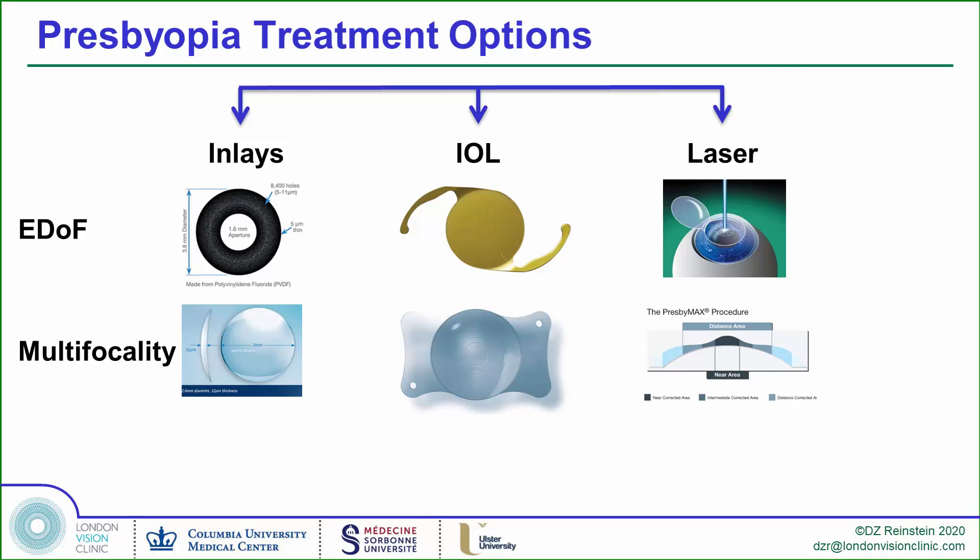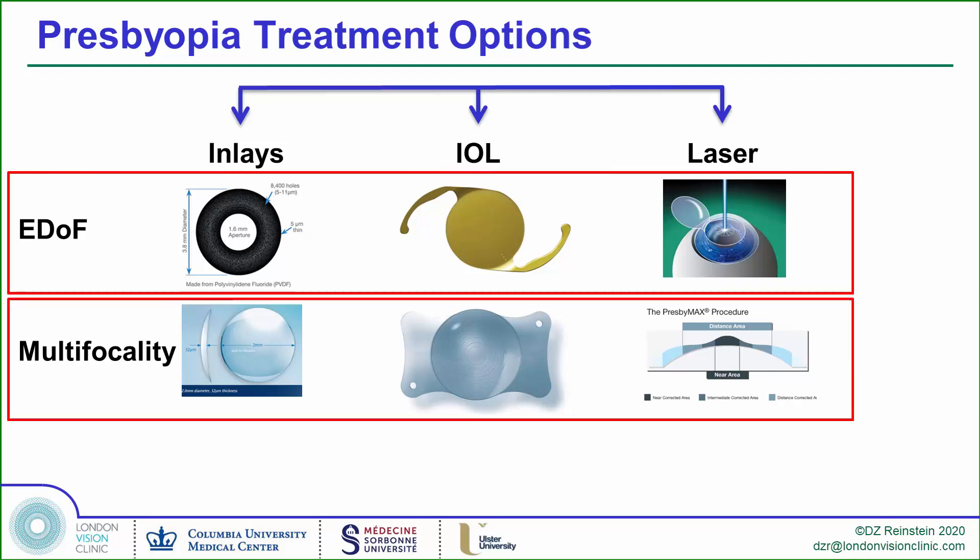Other than monovision, all three of the specific presbyopic surgical options fall into two main categories: extending the depth of field, or introducing multifocality — that is, two or more foci in the same eye.